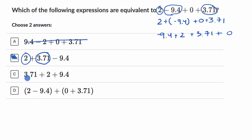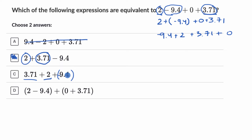Now this third choice has 3.71, it has the two, and now it's adding 9.4. We already said we could rewrite subtracting 9.4 as adding negative 9.4, but we can't rewrite that as just adding positive 9.4. If it had a negative there, then this would work, but it's not that. So I'm going to rule that one out.